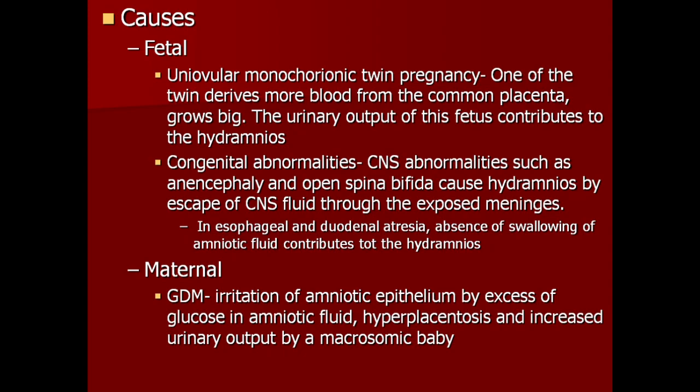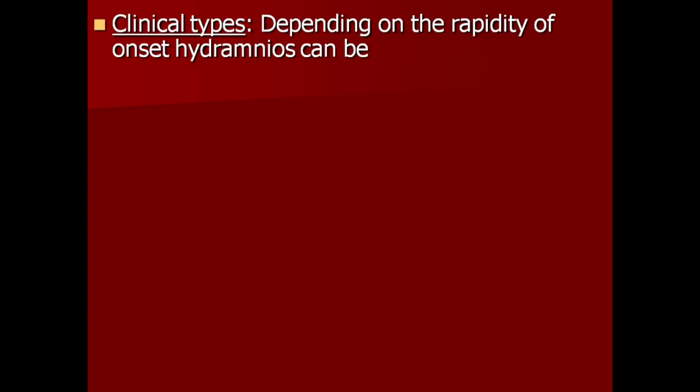In uniovular monochorionic twin pregnancy, one twin derives more blood from the common placenta, grows bigger, and the increased urinary output contributes to hydramnios. CNS abnormalities such as anencephaly and open spina bifida cause hydramnios by escape of CNS fluid through exposed meninges. In esophageal and duodenal atresia, absence of swallowing contributes to hydramnios. In GDM, irritation of amniotic epithelium by excess glucose, hyperplacentosis, and increased urinary output by a macrosomic baby are also causes.